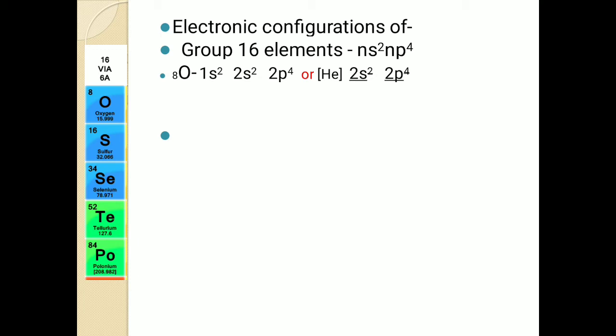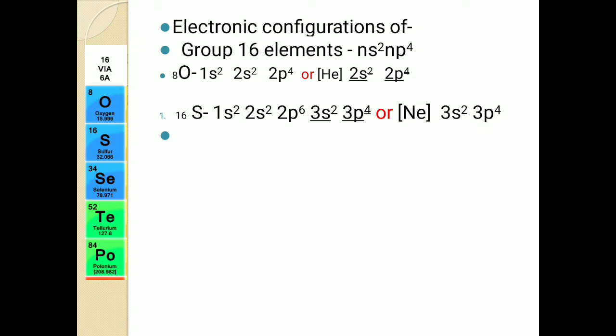Now we will look at the second element, sulfur, with atomic number 16. We have 16 electrons to distribute in different shells and subshells. The electronic configuration is: 1s², 2s², 2p⁶, 3s², 3p⁴. The first and second shells are complete, and the third shell has 6 electrons. The noble gas before sulfur is neon with atomic number 10, so the condensed electronic configuration of sulfur is [Ne] 3s², 3p⁴.